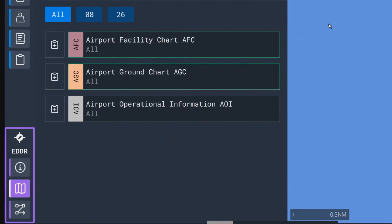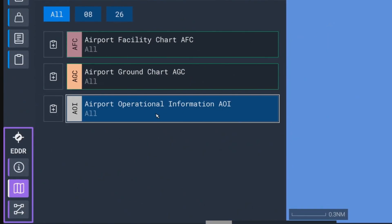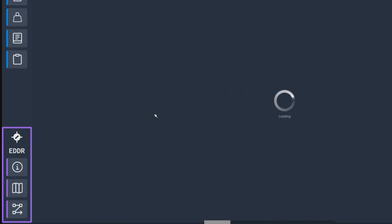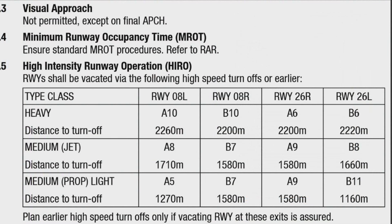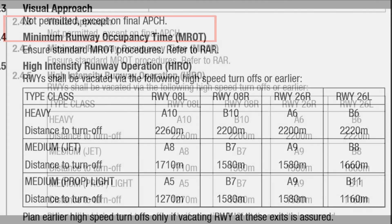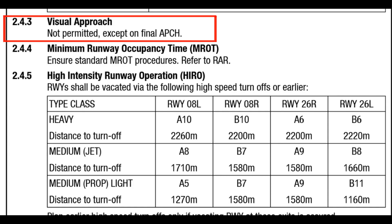One of the documents that is incredibly helpful — and if you have Microsoft Flight Simulator 2024 you will have access to it — is the AOI, the Airport Operational Information. You'll find a lot of useful information there. In the real world, we read these all the time because they give us a very good idea of what to do and what not to do at specific airports. This here is one of the pages for Munich.